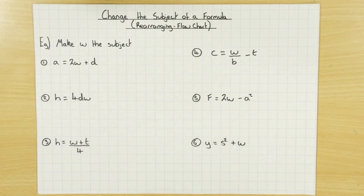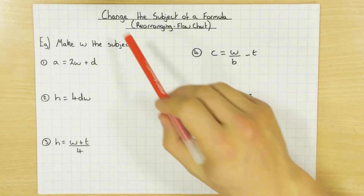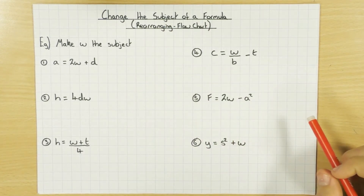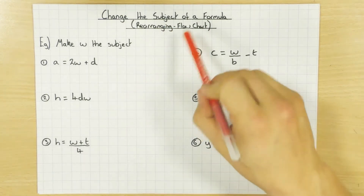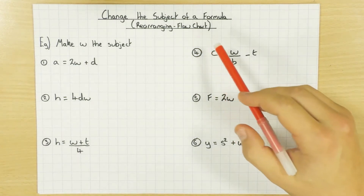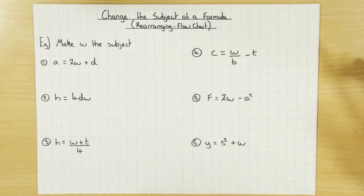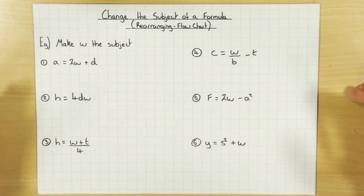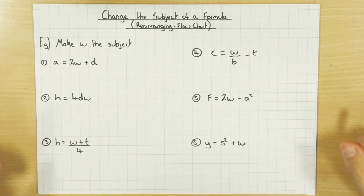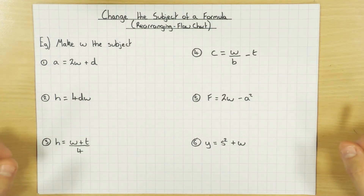Hi guys, in this video we're going to have a look at how we change the subject of a formula, also known as just rearranging the formula. This time I'm going to use the flowchart, so this is more for foundation students. If you haven't seen the flowchart before and used the balance method, have a look at my other video on rearranging which uses the balance method. But if you're used to using the flowchart, you're definitely in the right place because this is what we're going to be using to solve or rearrange these equations.